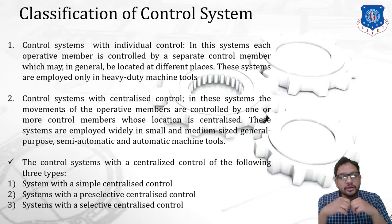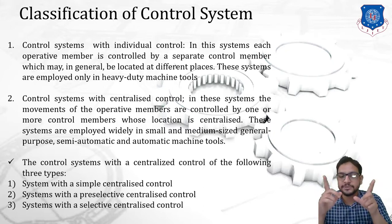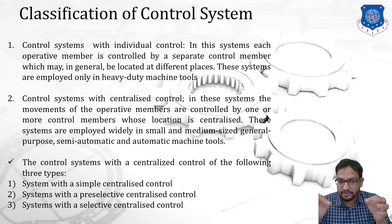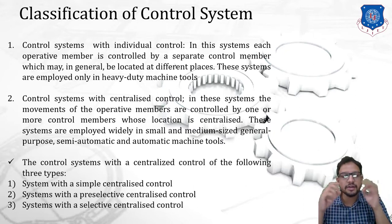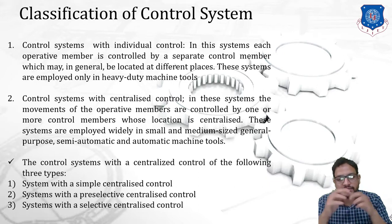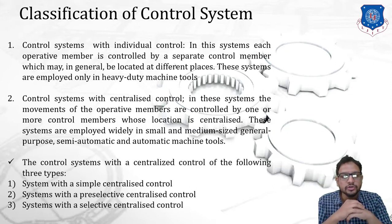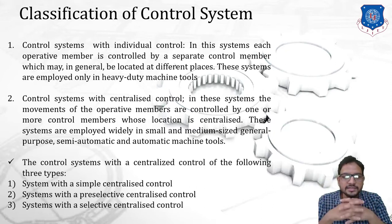The control system with centralized control is further classified into three types: system with simple centralized control, system with pre-selective centralized control, and system with selective centralized control. These three types of centralized control will be studied in our next session. I hope you are clear with the introduction of a control system from today's session.